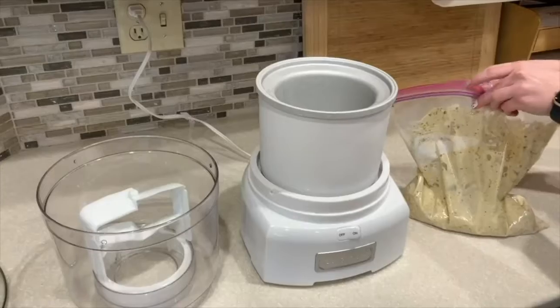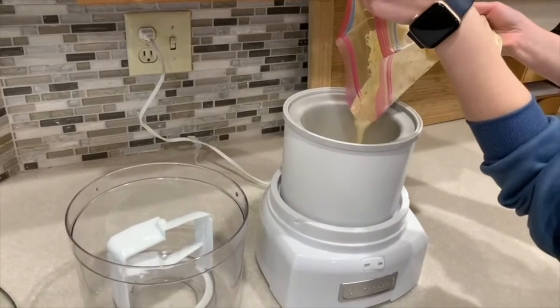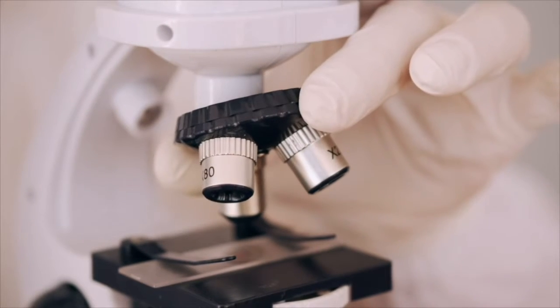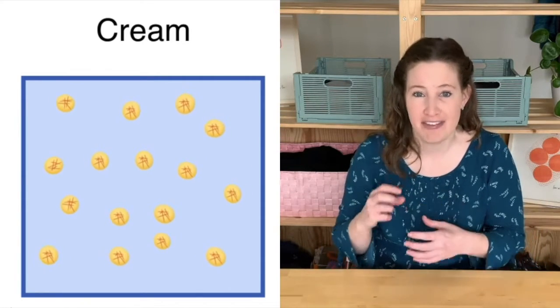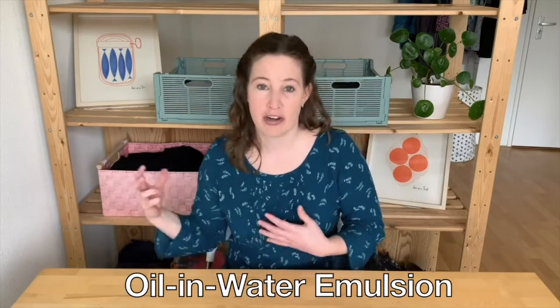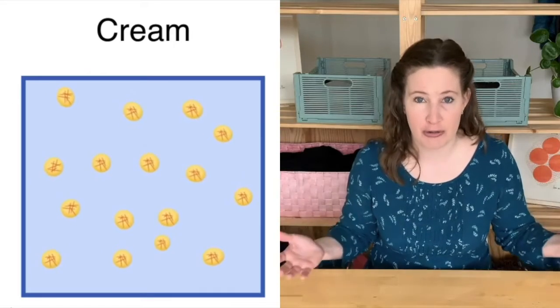We know we start with cream, but to understand how we convert cream into ice cream, we have to take a much closer look at what we're starting with — we have to zoom into cream and see what it is on a very tiny scale. If we had a microscope, you would see that cream has a very special structure that we call an emulsion. Cream has a continuous water phase that surrounds and holds all these tiny fat globules — little spheres of fat. This is an oil-in-water emulsion because the fat phase is dispersed as tiny droplets held within a watery continuous phase.